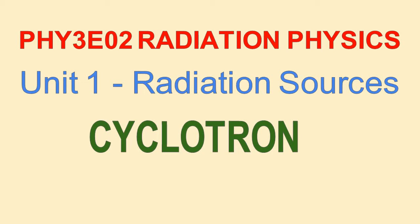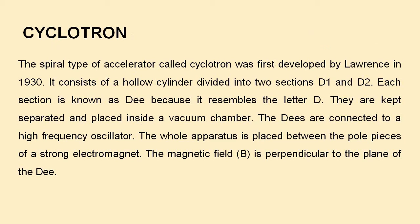In this class, we will discuss the cyclotron. This cyclotron is an accelerator — a device used to increase the energy or to accelerate charged particles. We have already studied cyclotron in our previous classes. As we know, it is a spiral type of accelerator and was first developed by Lorentz in 1930.